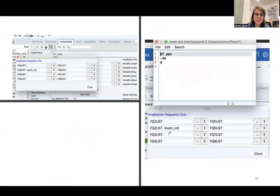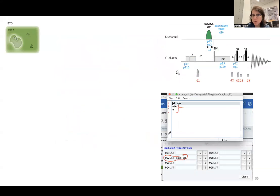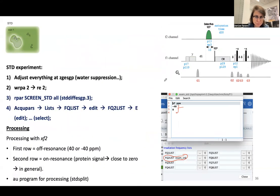So how do I set this experiment? There are a lot of pulse sequences, but I especially like this one, it's called STD, as STD diff ES for excitation sculpt GP dot three. This is one of the pulse sequences I like. What are the parameters that I have to set for my experiment? I have to have this FQ2LIST.